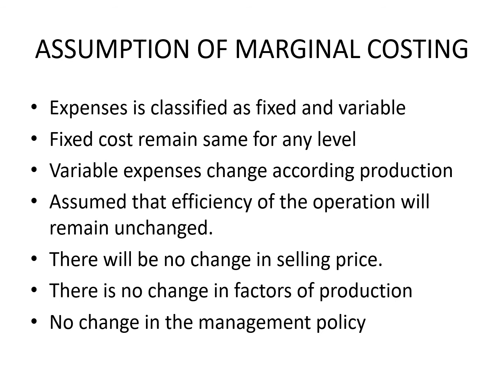Assumption four: it is assumed that the efficiency of operations will remain unchanged, because if the level of efficiency changes, there would be a change in variable cost per unit. Assumption five: there will be no change in the selling price, irrespective of whether competition increases or is reduced, or whether there is a large-scale change in production. Assumption six: there is no change in factors of production like material, labor, etc. Assumption eight: there would be no change in management policies, technological methods, and efficiency of men, machines, and material — which is totally impossible in practice.